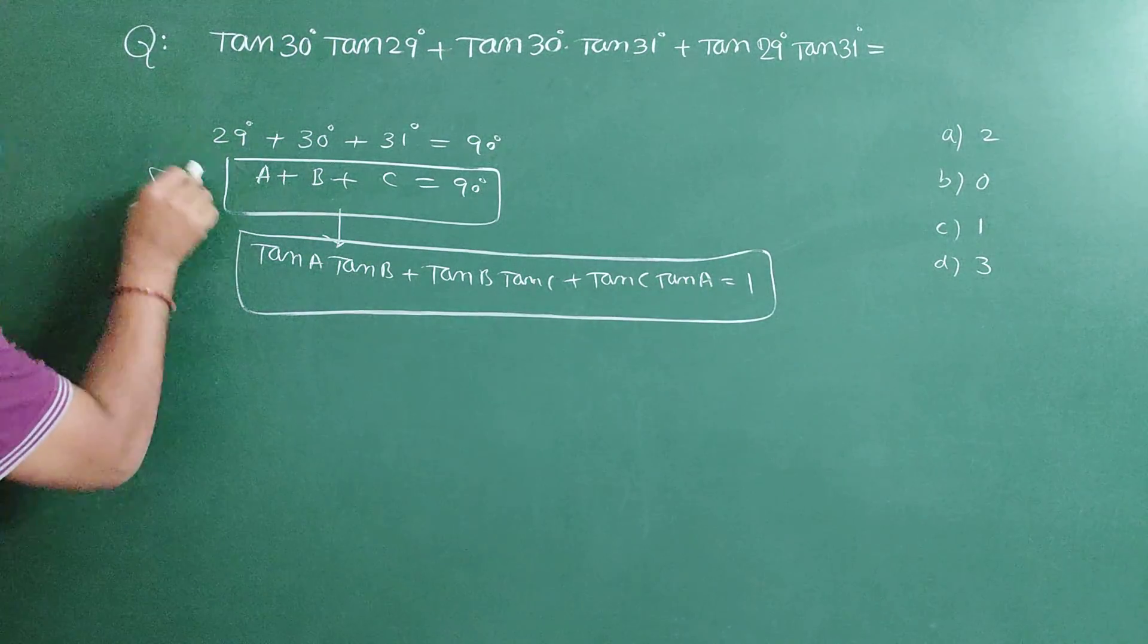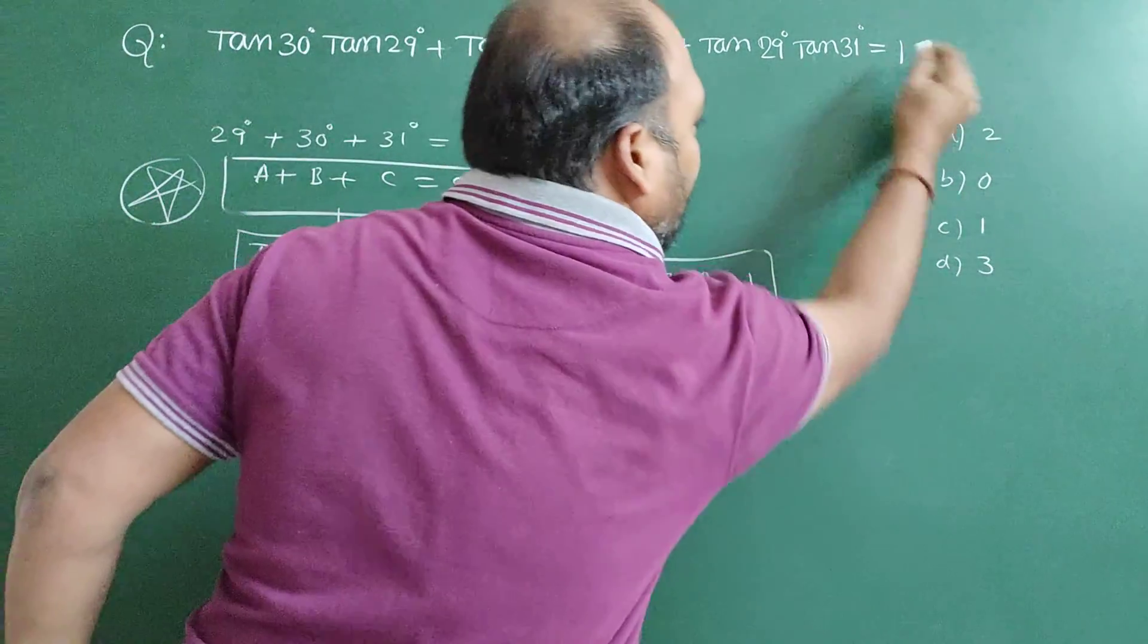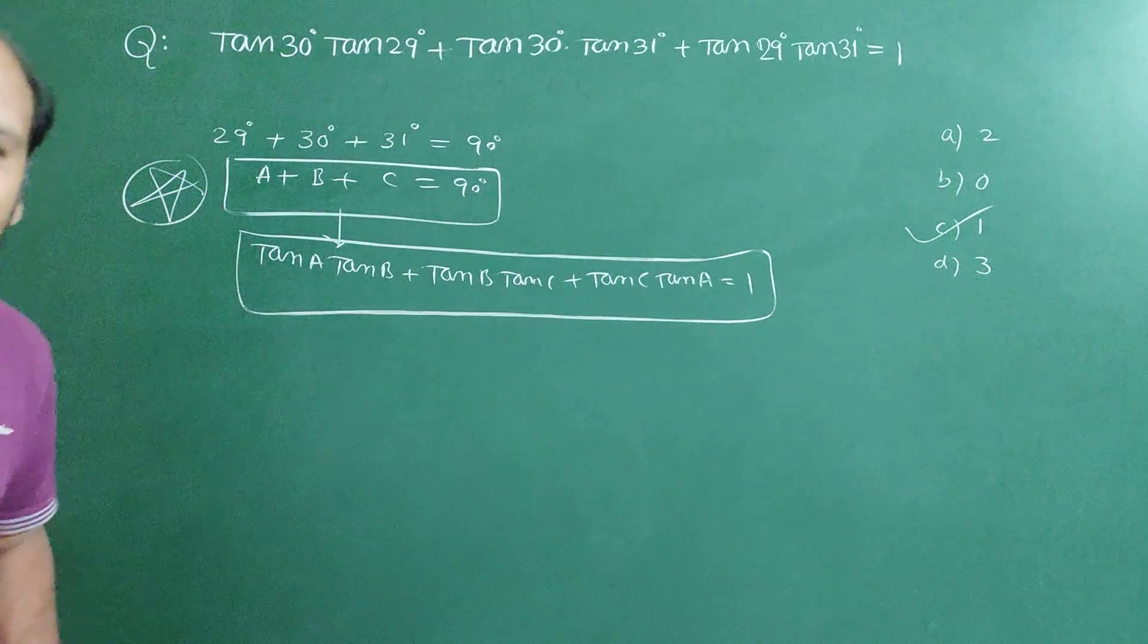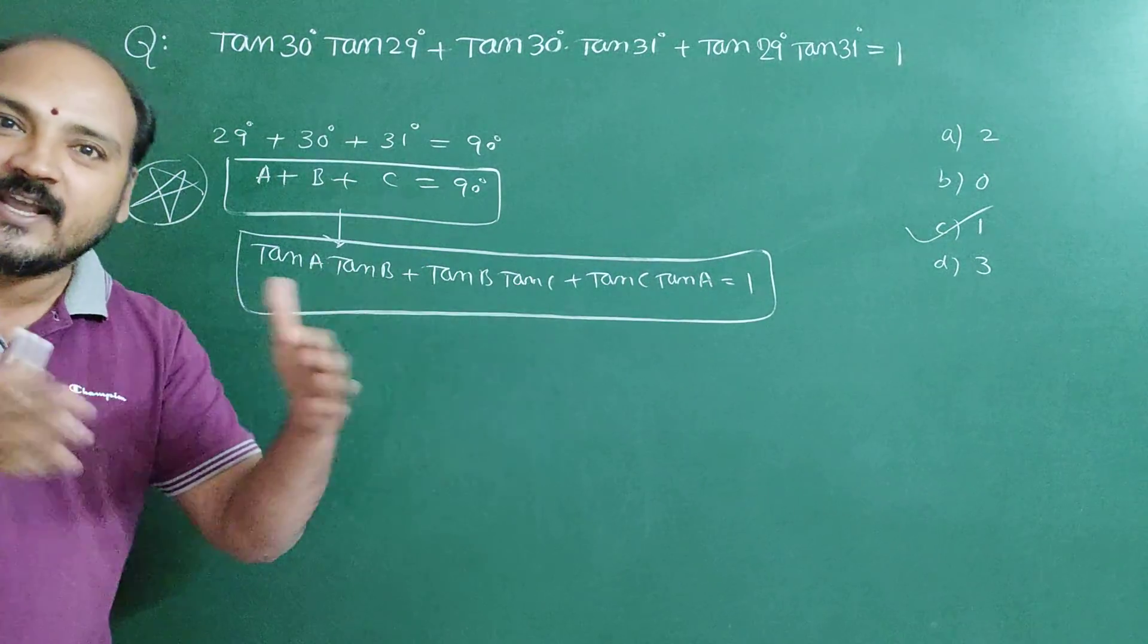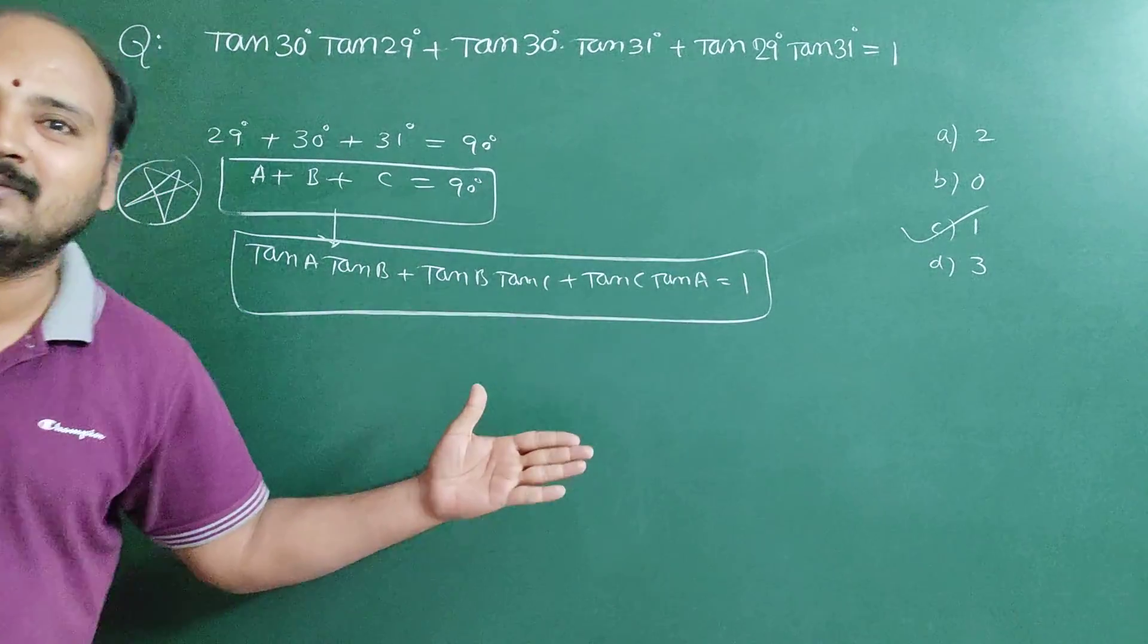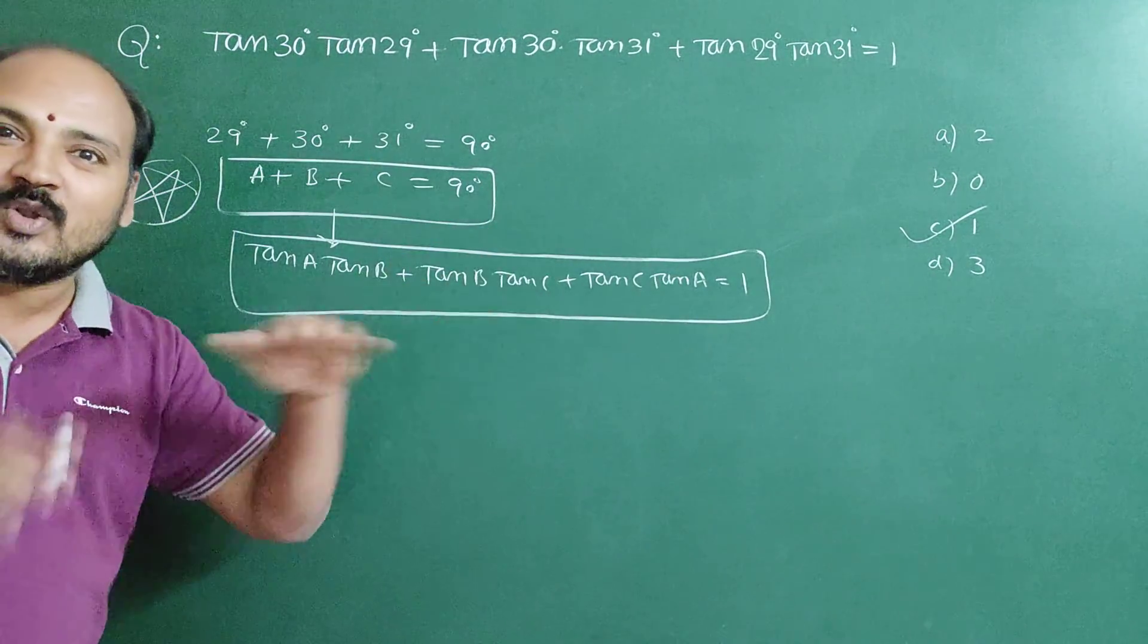So by using this shortcut result, this value is equal to 1. It is there in the third option. Thank you, dear students. This is the short trick in trigonometry. When the sum of these three angles is equal to 90, you can give the answer as 1.